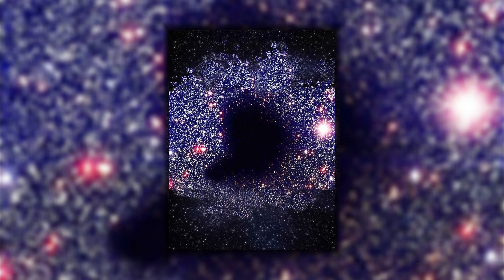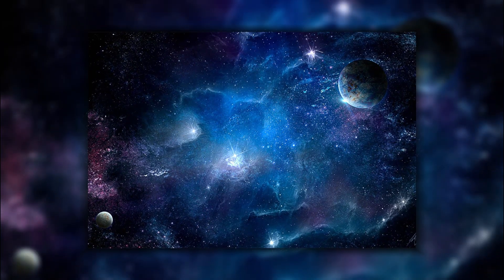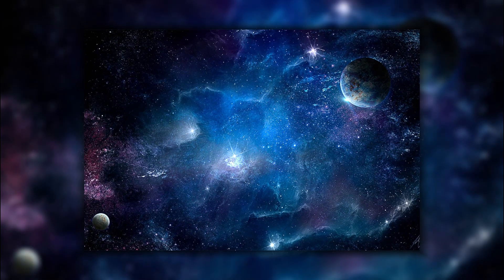The Boötes Void is approximately 250 million light-years in diameter and contains only about 60 galaxies. This is in stark contrast to the surrounding regions of space, which contain thousands of galaxies.